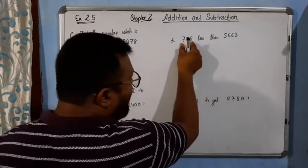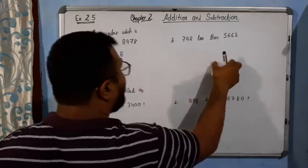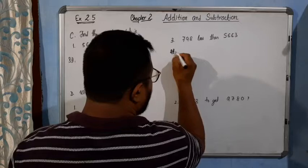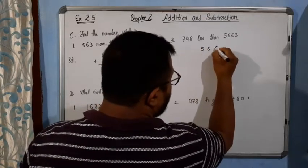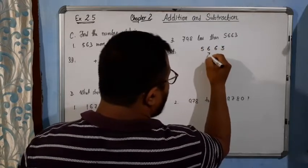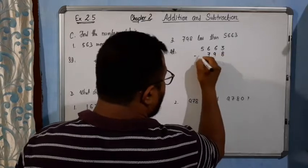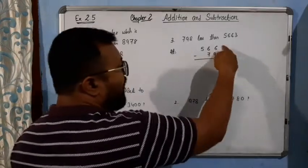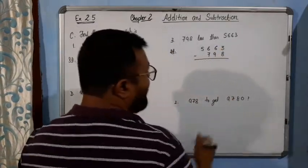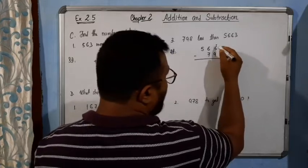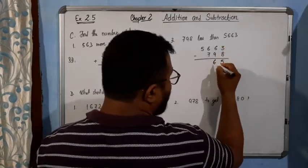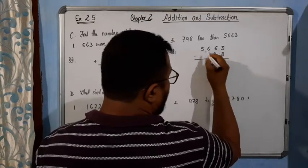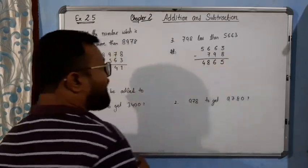So we will subtract 798 from this number. Whatever the result is, that will be our required number. The solution is 5663 minus 798. Now 3 is smaller than 8, so we will borrow 1. It becomes 13. 13 minus 8 gives 5. Now it becomes 5, borrow 1, makes 15. We get 8 and it becomes 4. So the answer is 4865.